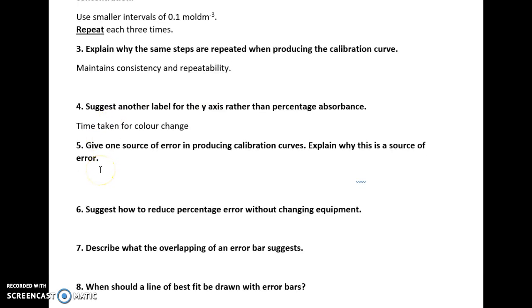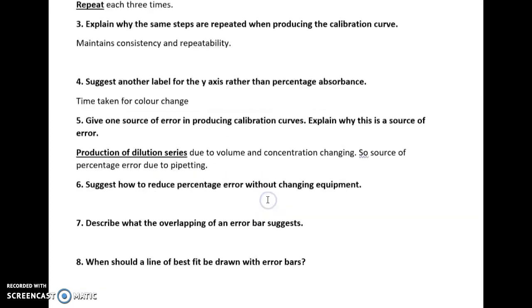Give one source of error in producing calibration curves and explain why this is a source of error. So what you can say is that the production of dilution series is the source of error because we keep changing volumes and we keep changing concentrations, and that's where the whole idea of uncertainty comes from. So the production of dilution series is the source of the error because we keep changing the volume and changing the concentration and constantly pipetting.